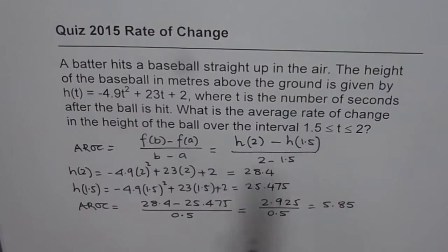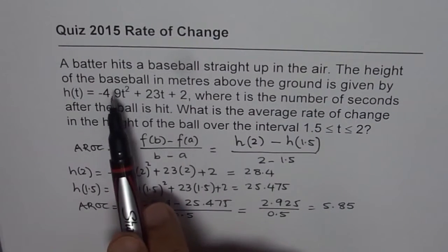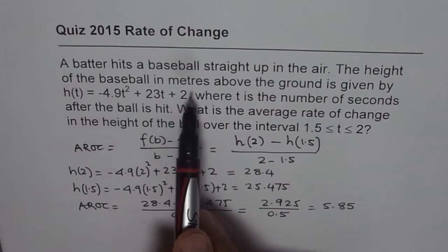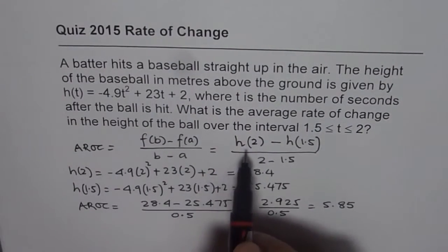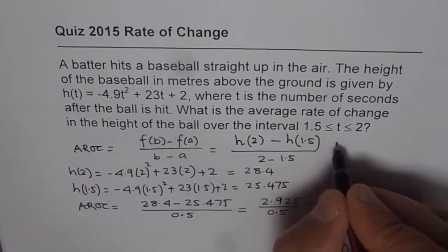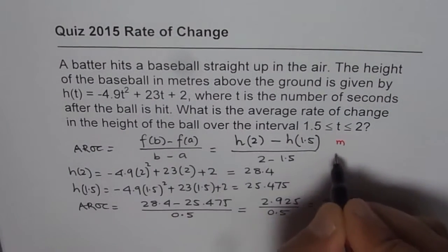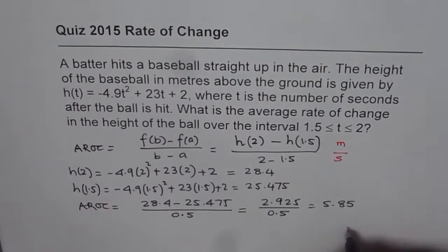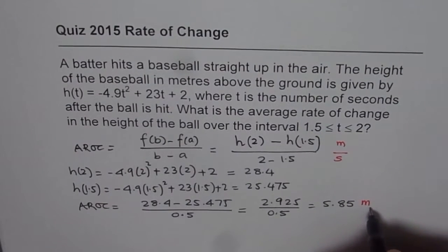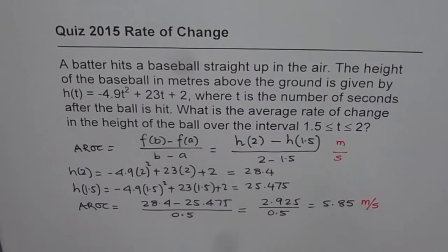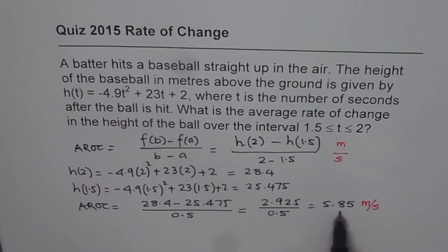If you go back to the question, it says that the height of the baseball is in meters above the ground, and time is in seconds. So this difference in height is in meters and that difference is in seconds, which is meters per second. Average rate of change should have units: meters per second.